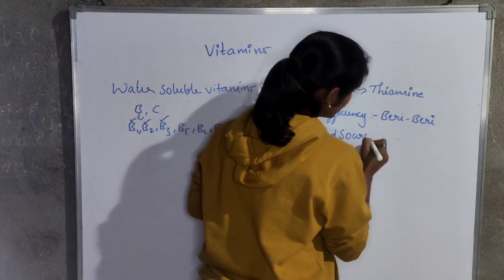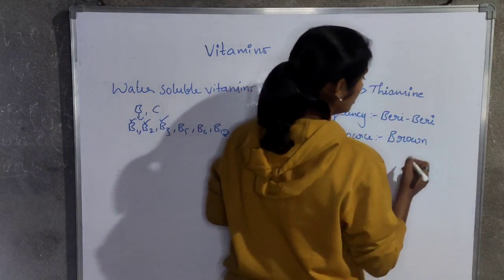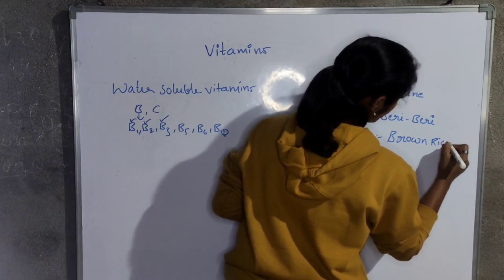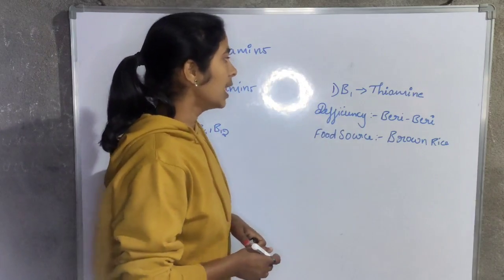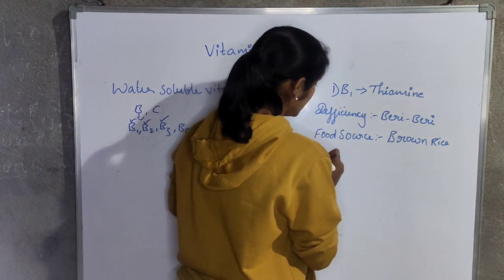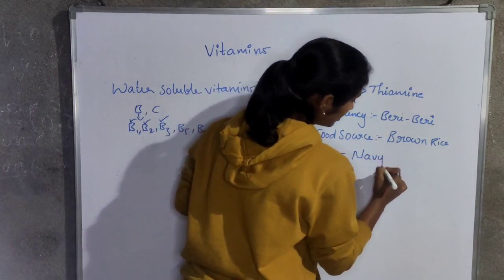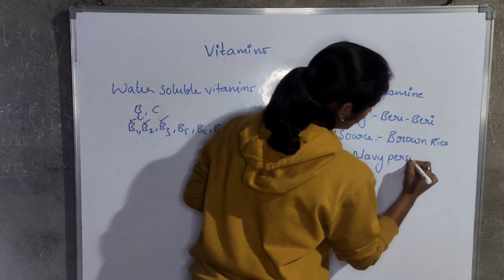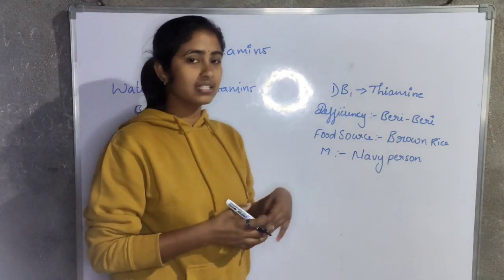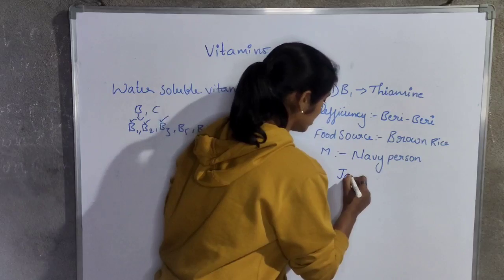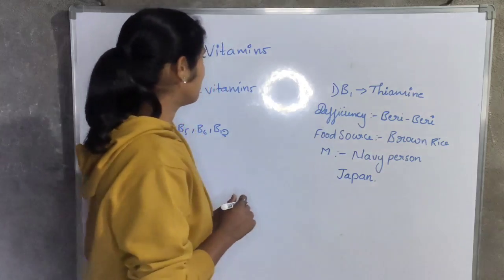The food source for B1 vitamin is brown rice. Brown rice contains a high amount of B1 vitamin. So that is about B1 vitamin.